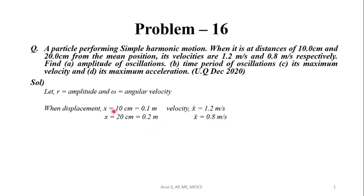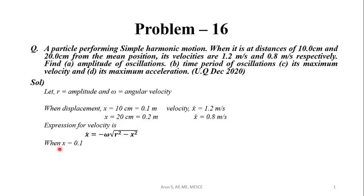The velocity expression for simple harmonic motion is: x-dot = ±ω√(r² − x²). Substituting x = 0.1 m: 1.2 = ω√(r² − 0.1²). Let this be equation number 1.